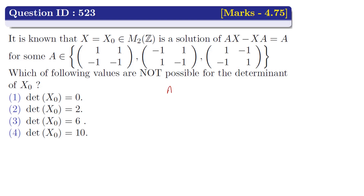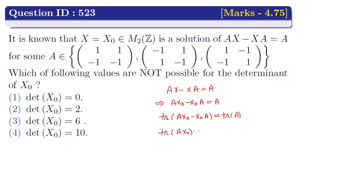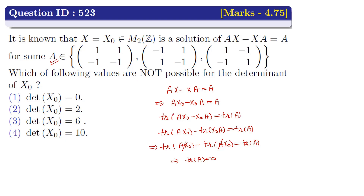It is given that x is the solution of Ax - xA = A. This implies Ax0 - x0A = A. Now applying trace on both sides, we get trace(Ax0 - x0A) = trace(A). Applying the property that trace(A-B) = trace(A) - trace(B), and using trace(AB) = trace(BA), the left side cancels out. This implies trace(A) = 0, meaning we must choose matrices from the set whose trace is 0.